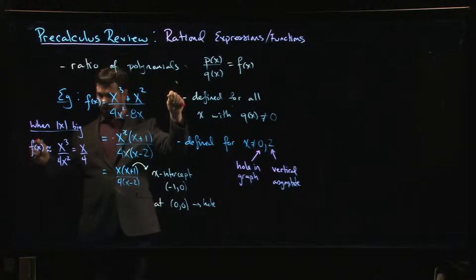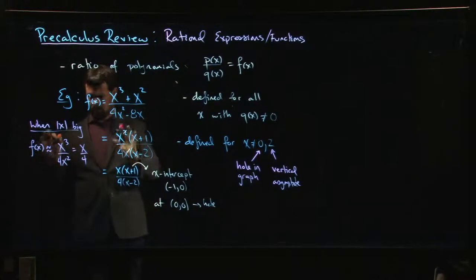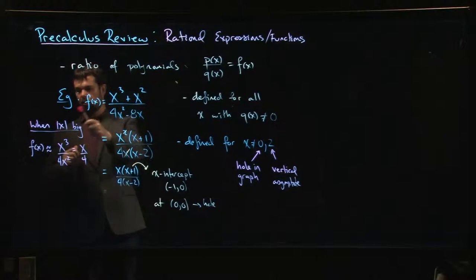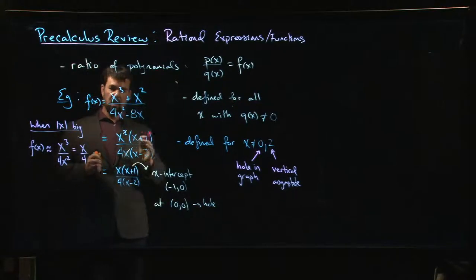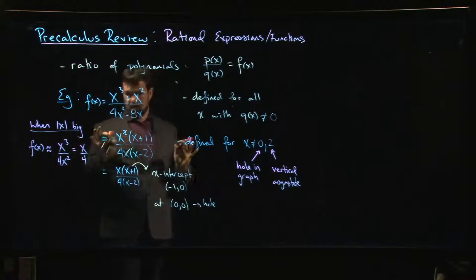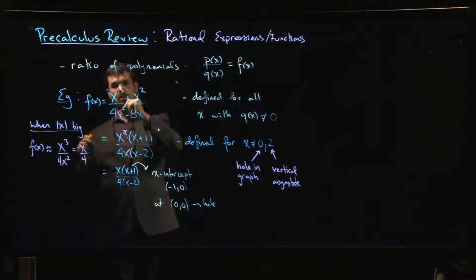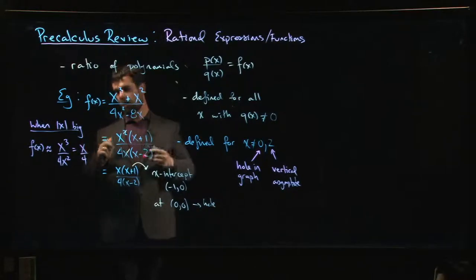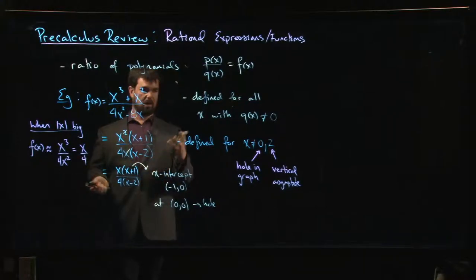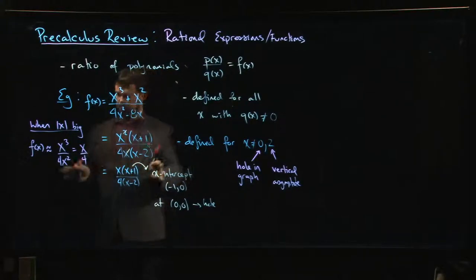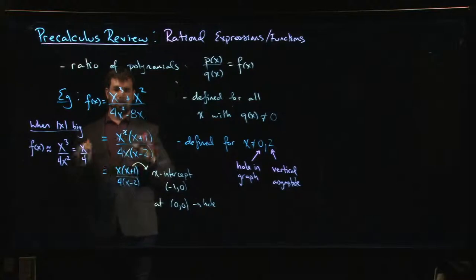In general, when you want to know what's happening for large values of x, this is what you do - you just look at the top powers. In this case, the degree of the polynomial in the numerator was greater than the degree of the polynomial in the denominator. If the degree in the numerator is less than or equal to the one in the denominator, you're going to have a horizontal asymptote. It doesn't happen here, but it will happen in other situations.